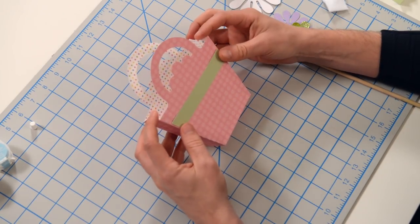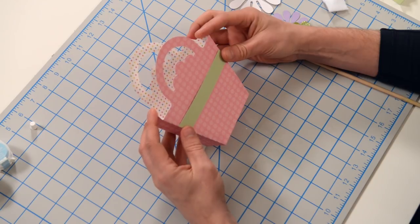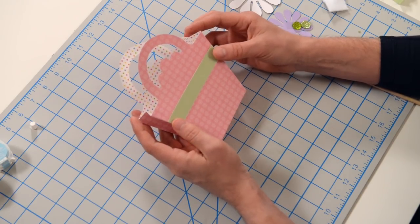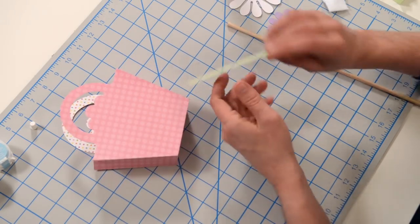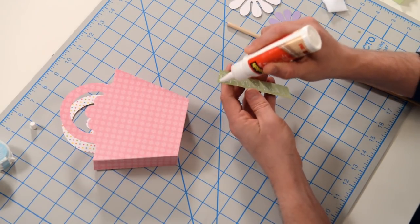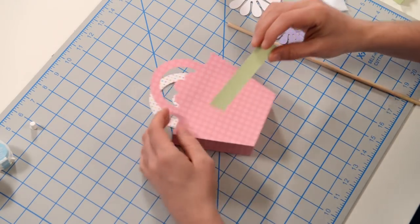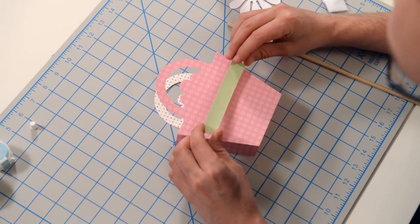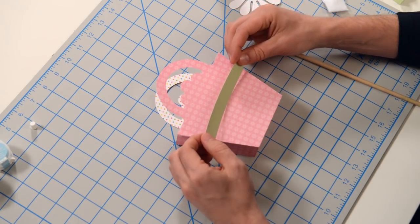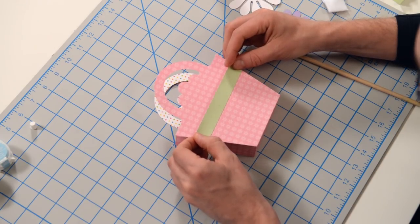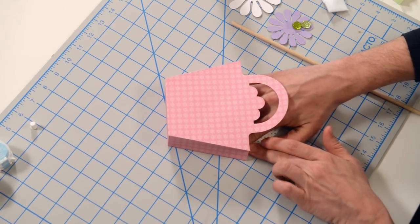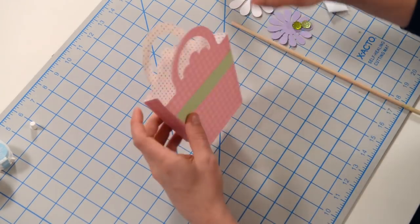Next thing we're going to do is take this little green strip. In my case, it's green. Yours might be a different color and you want to just kind of move it up and down until it fits the little shape there on the front. Let's get that glued down and just make sure that you eyeball that correctly.